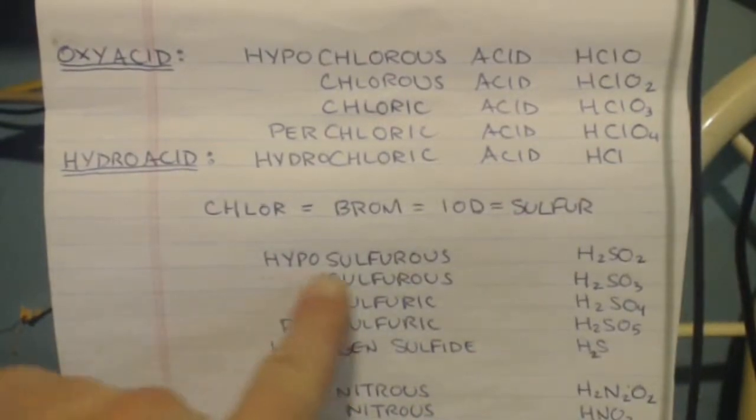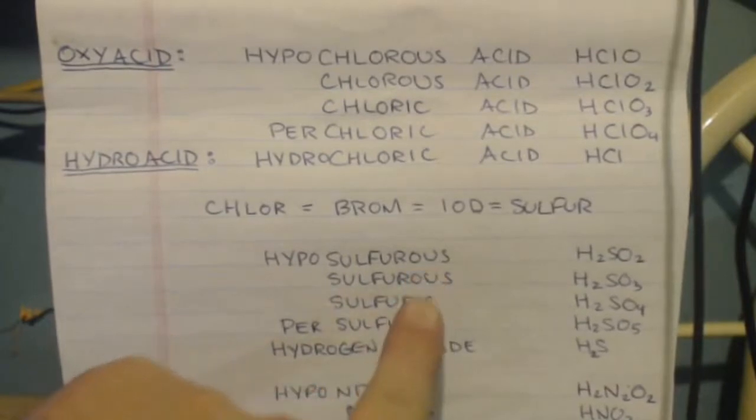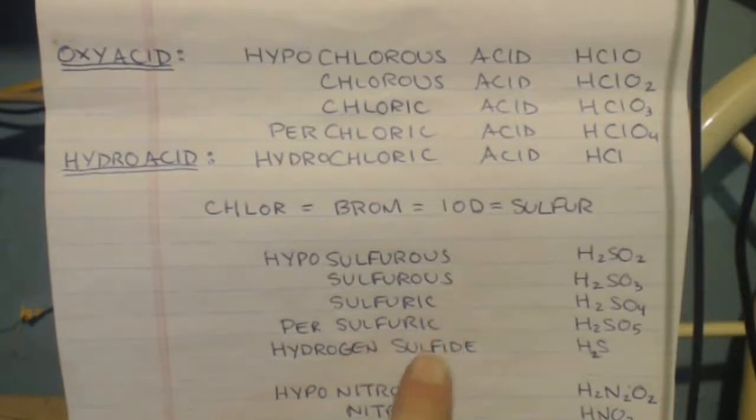What it means is it's the least amount of oxygens that that oxyacid can have. And then you work your way up. If you know that the lowest one is two, then it's hypo-O-U-S. The next one after that is O-U-S. One after that is I-C. One after that is per-I-C. Or close to it.